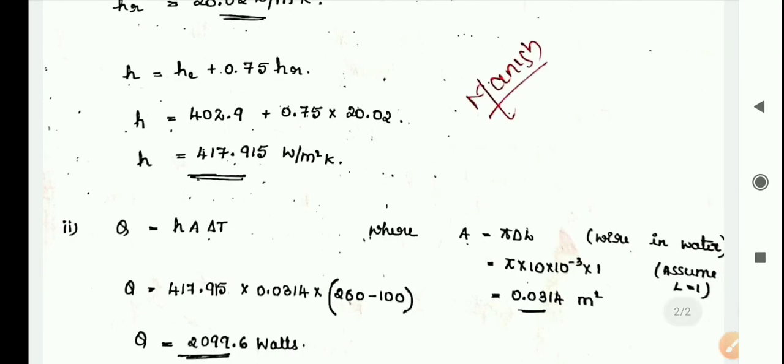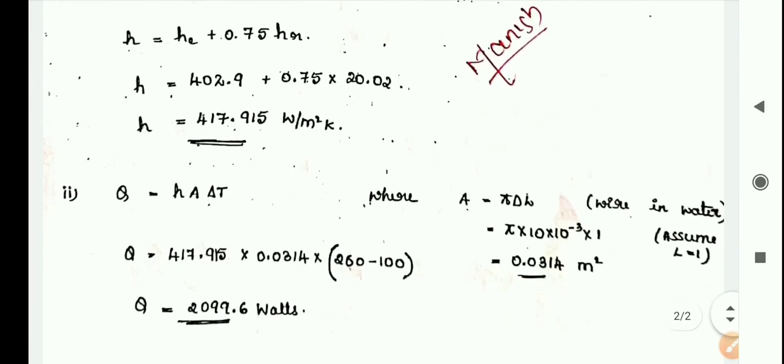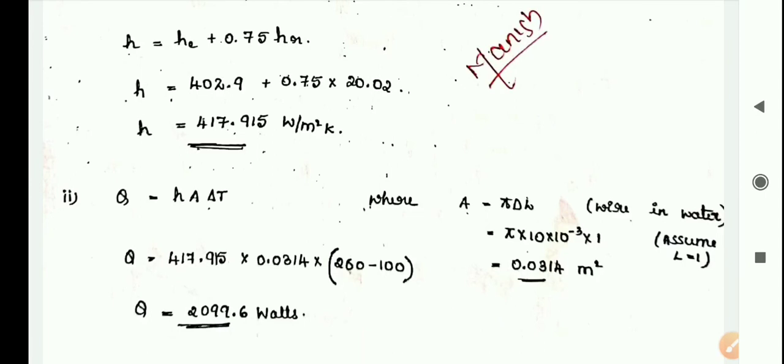The next part of the problem is we have to find Q. Q is equal to h times A times delta T. h-value is known, delta T is known. Area is the area of the wire, which is pi D L. pi times diameter 10 mm times length.